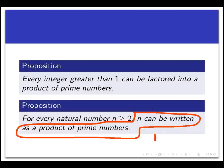P of n, which we'll call the predicate, is the statement n can be written as a product of prime numbers. And we're claiming here that P of n is true for all n greater than or equal to 2.